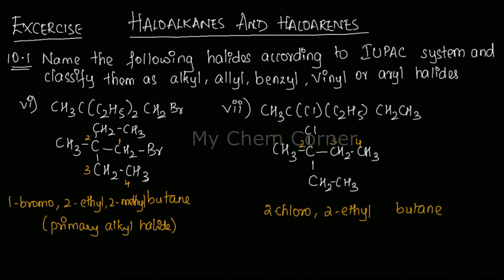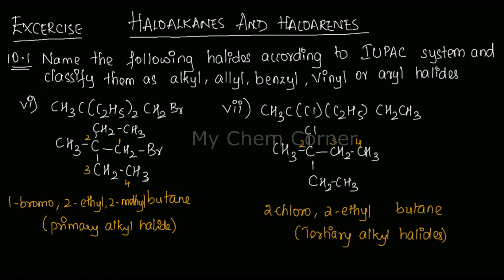Looking at the nature of this compound: on one side of the carbon there's an alkyl group, on another side there's an alkyl group, and on the third side there's yet another alkyl group. Such alkyl halides where three alkyl groups are attached to the halide-bearing carbon are called tertiary alkyl halides.